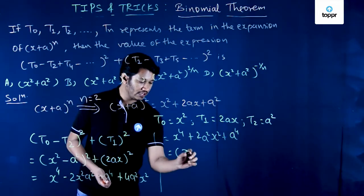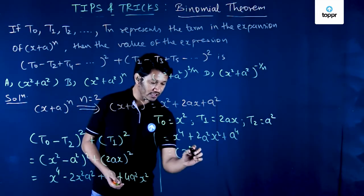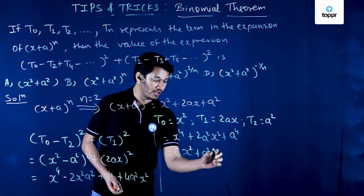This can be collected, all the terms can be combined and we can write it as (x^2 + a^2)^2.